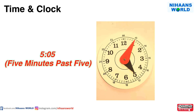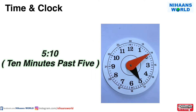Friends, let us see some more examples of clock reading. In this clock, the hour hand is at 5 and the minute hand is at 1, so the time is 5 minutes past 5. In this clock, the hour hand is at 5 and the minute hand is at 2, so the time is 10 minutes past 5.